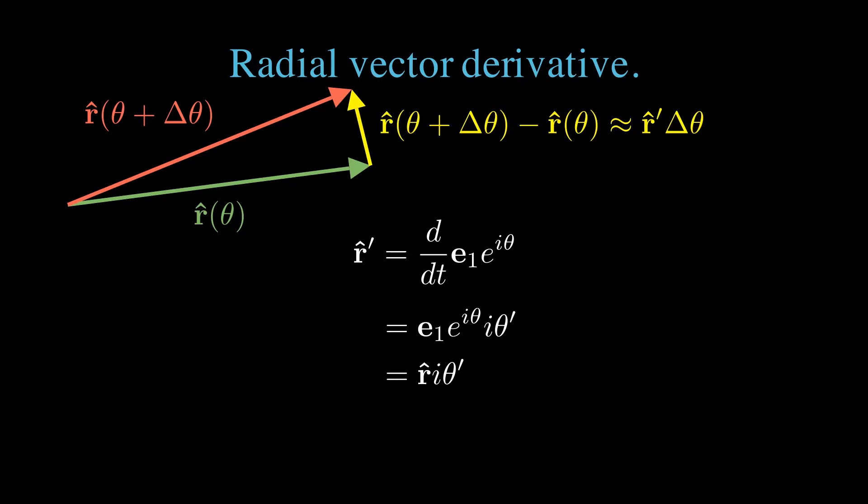The leading term e1 e to the i theta is r hat, leaving us with r hat i theta prime. We have to be careful not to commute i with any vector factors. We call theta prime omega, and recognize that r hat i is theta hat. So we're left with r hat prime equals omega theta hat.